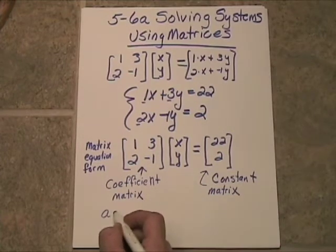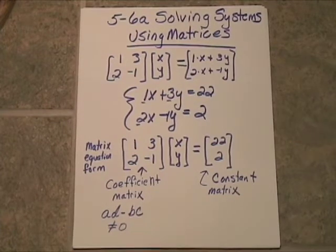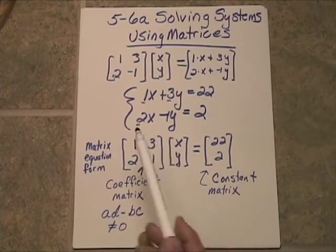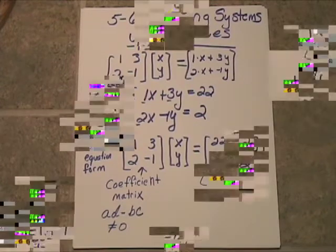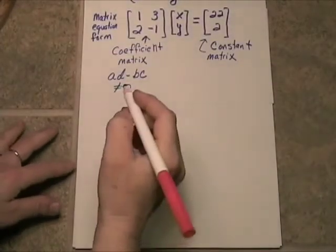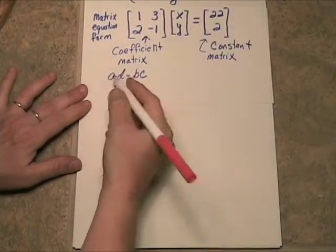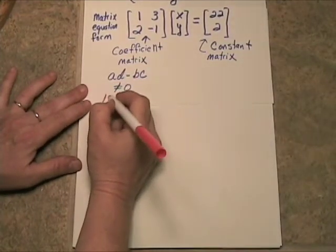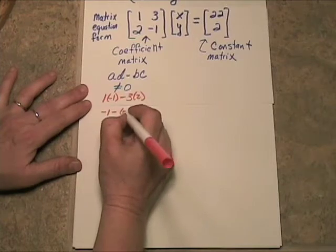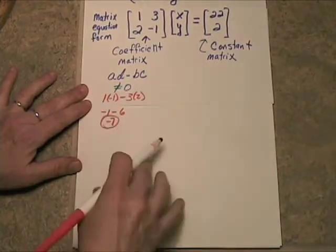And remember to do that, you have to check that the product AD minus the product BC is not equal to 0. So A times D is 1 times negative 1, and the B times C would be 3 times 2. And if we subtract those, we do not get 0. So this is going to have an inverse. Now we've got to find the determinant, which is the AD minus BC. So A times D is negative 1 minus 3 times 2. So negative 1 minus 6, which is negative 7. So our determinant here is going to be negative 7.